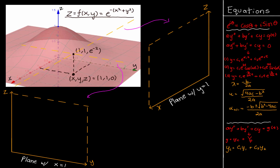If you're getting confused about how we're breaking this up, here's what it looks like on the surface itself. For the xz plane where y equals 1, we look at the constant point y equals 1 and draw the cross section along the surface. For the yz plane, we look at x equals 1 being kept constant and extend outward, since y and z are the free variables. The point (1, 1, e^(-2)) occurs at the intersection of the two planes along y equals 1 and x equals 1.